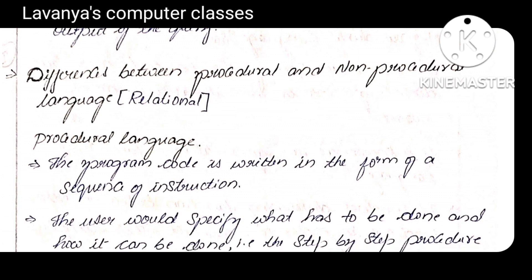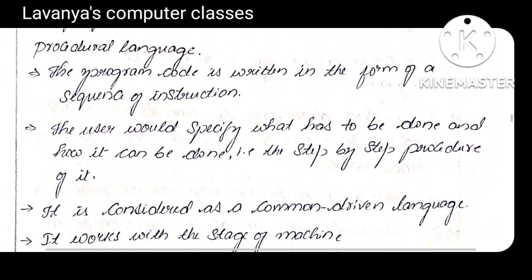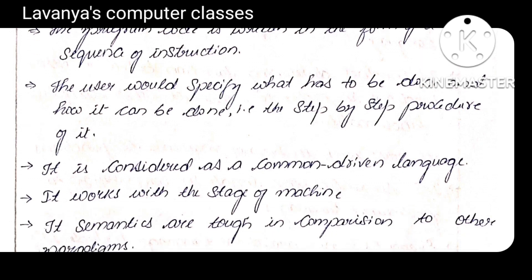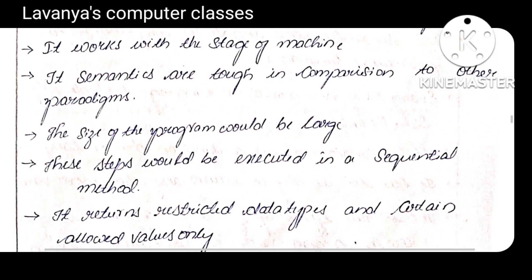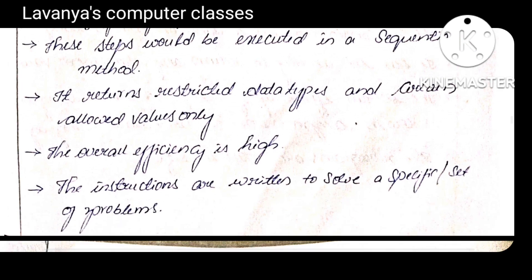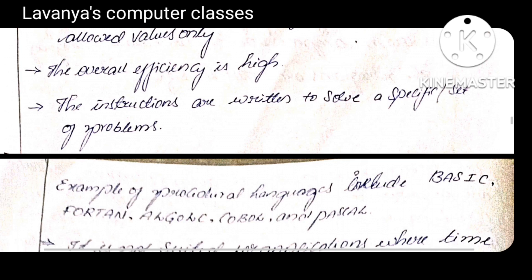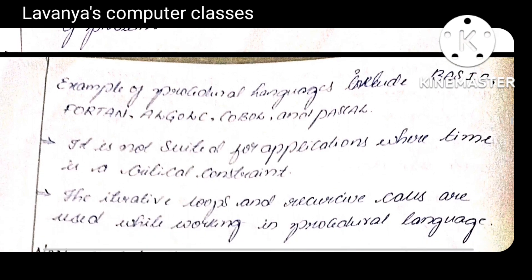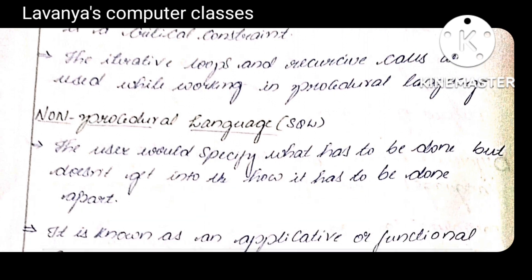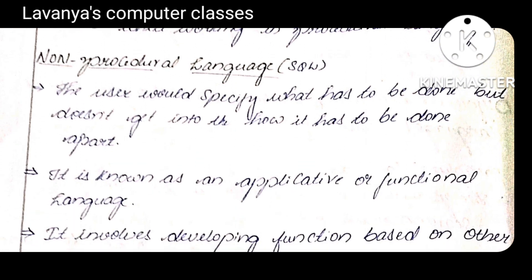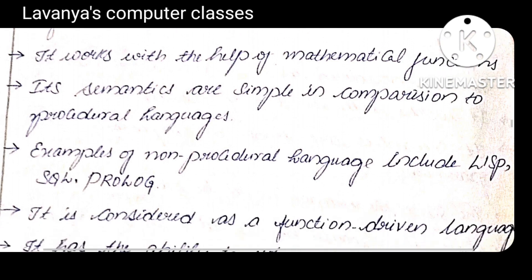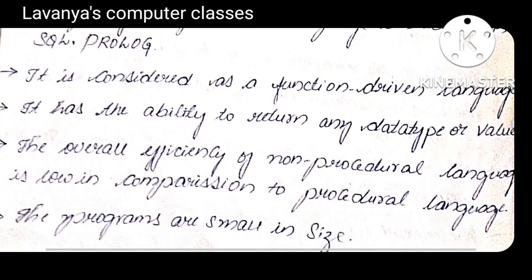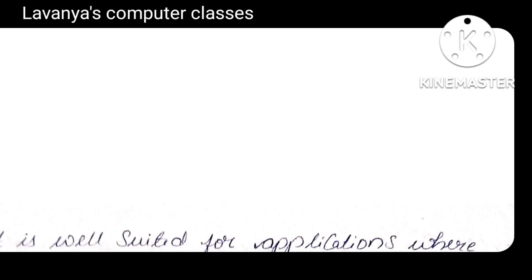Difference between procedural and non-procedural language: Procedural language explains both how to write the commands and how to execute them. Examples: relational algebra, domain relational calculus, tuple relational calculus — all are examples of procedural query languages. Non-procedural language explains what data we need but not how to execute it. SQL is an example of a non-procedural query language. That's why if you execute any non-procedural query language, we need a query processing engine — first it is converted into relational algebra, then it goes for execution.